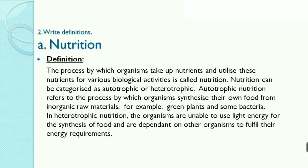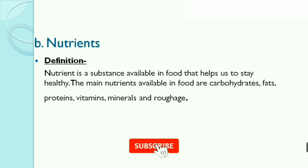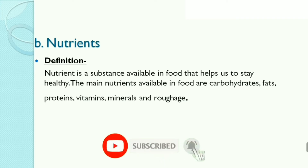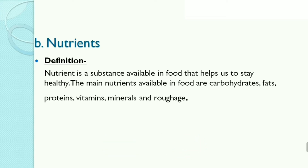In heterotrophic nutrition, the organisms are unable to use light energy for the synthesis of food and are dependent on other organisms to fulfill their energy requirements. Second, nutrients: a nutrient is a substance available in food that helps us to stay healthy. The main nutrients available in food are carbohydrates, fats, proteins, vitamins, minerals, and roughage.